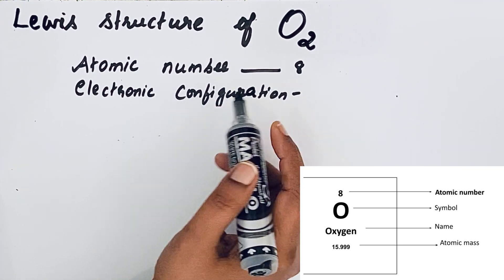To write the Lewis structure, we should know that oxygen's atomic number is 8. From that, we can write the electronic configuration: 2, 6. The electrons in the outer shell are called valence electrons. So there are 6 valence electrons in an oxygen atom.